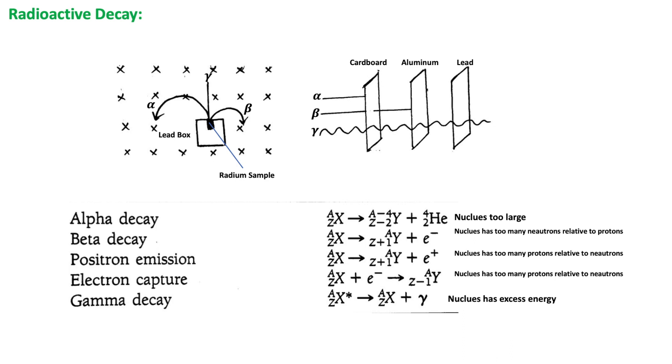Radioactive decay is a statistical process and it obeys the laws of chance. There is no cause-effect relationship in the decay of a particular nucleus. There is only a certain probability per unit time.